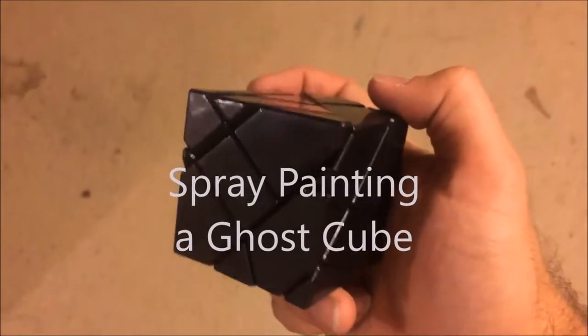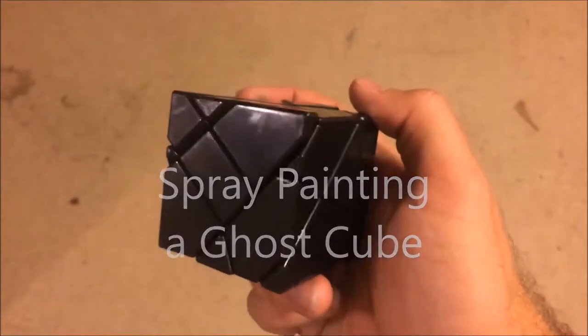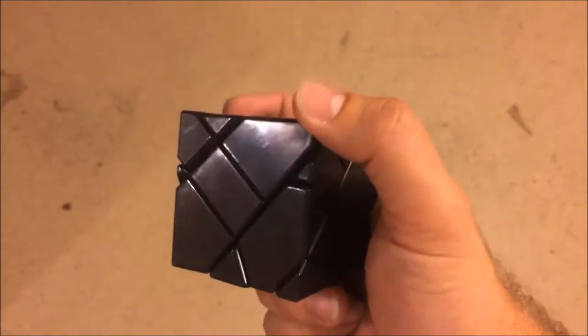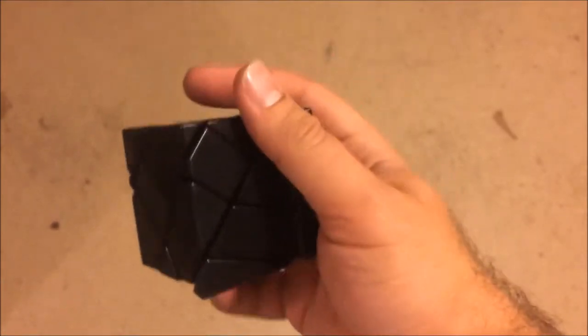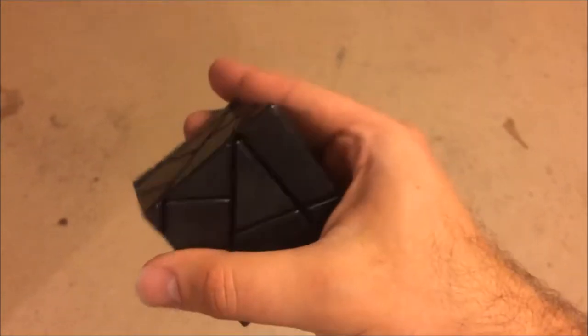Good evening, YouTube. This is called a ghost cube, and it's basically the same thing as a Rubik's Cube, but it's been sliced differently. Instead of making a cube, when it's not solved, it becomes kind of a random jumble with shapes.